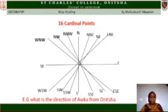Sixteen cardinal points: North, North-North-East, North-East, East-North-East, East, East-South-East, South-East, South-South-East, South, South-South-West, South-West, West-South-West, West, West-North-West, North-West, North-North-West. These are the sixteen cardinal points.